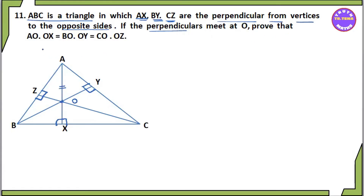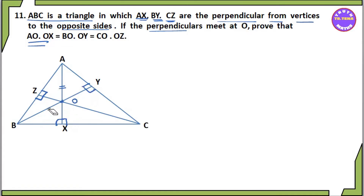Let's say AO into OX — that's what the AX line gives us: AO·OX. Similarly, BO·OY and CO·OZ are the corresponding products for the other perpendiculars.